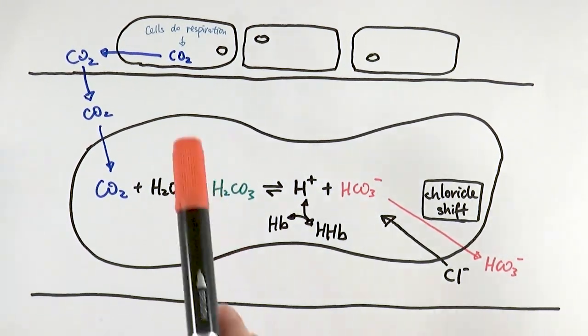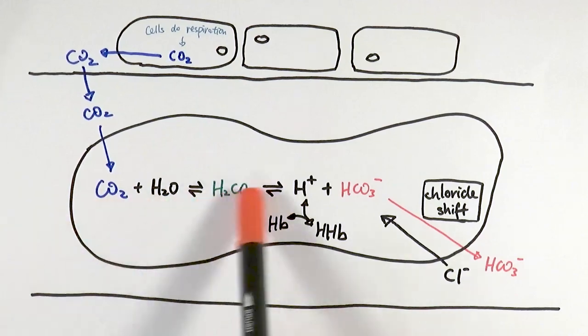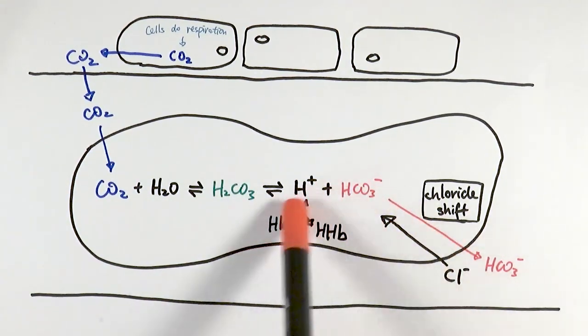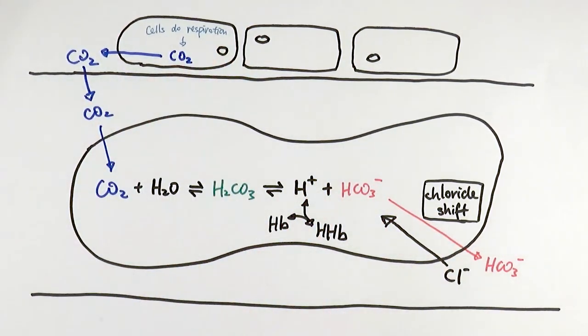So this forward direction occurs in the tissues and organs, and the opposite direction occurs when we get to the lungs. This is how we transport carbon dioxide in the body.